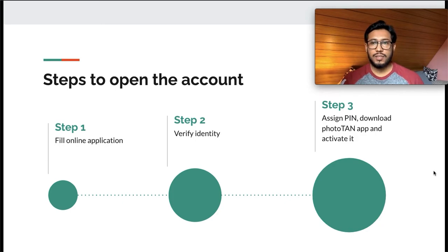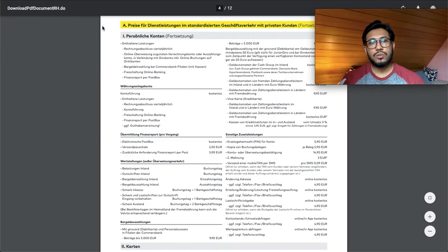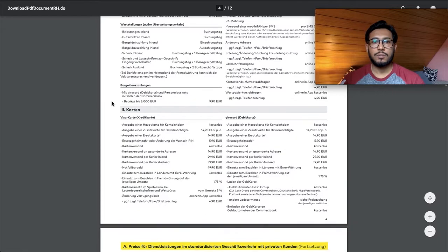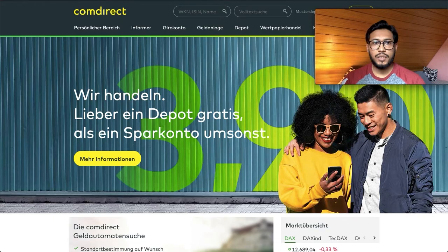You can open a Comdirect account in three steps. The first is to fill out an online application. The second is to verify your account — for Comdirect you'll have to verify using Post-Ident. The third and final step is to assign a PIN to your IBAN account, download the Photo-TAN app, activate it, and then start using your account. I will attach a link in the description with all costs associated with buying and selling stocks and ETFs with Comdirect.